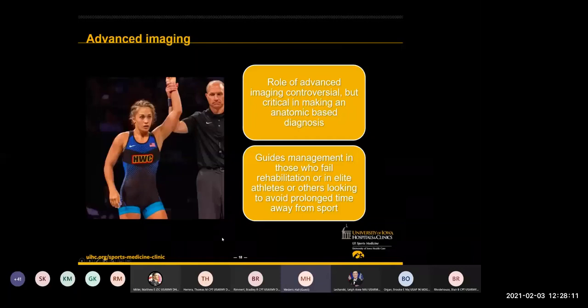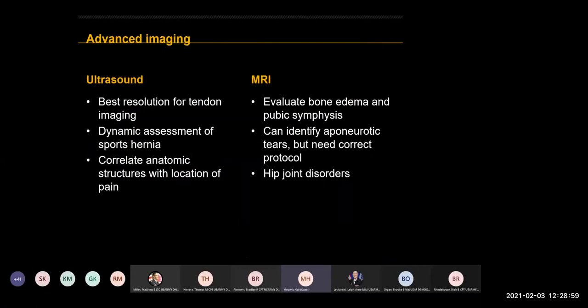Advanced imaging is critical in really making an anatomic-based diagnosis. I don't like to guess — I like to know what's going on. I'm a liberal imager, particularly in elite sport. If you're talking syndromes and gray area without a diagnosis after six months of rehab, that athlete's going somewhere else. When looking at ultrasound versus MRI, there are different reasons you might pick one over the other. Everybody always talks about how operator-dependent ultrasound is, and certainly that's true, but MRI is every bit as operator dependent as ultrasound. Do not forget that if you order a generic pelvis MRI, it's going to be worthless for this problem — you really need to work with your radiologist and develop a sports hernia or athletic groin pain protocol with the right specifications.